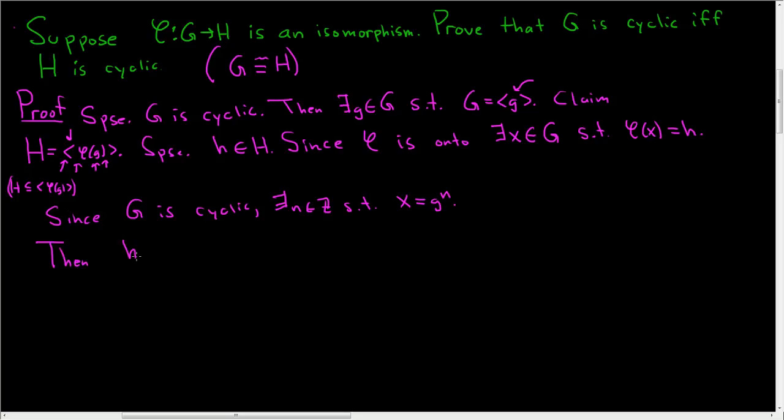So then H, well that's phi of x, that's equal to, well we know x is G to the n, so this is phi of G to the n. But this is really phi of G to the n. And that's certainly in the cyclic group generated by phi of G. Thus, H is contained in this cyclic group generated by phi of G.